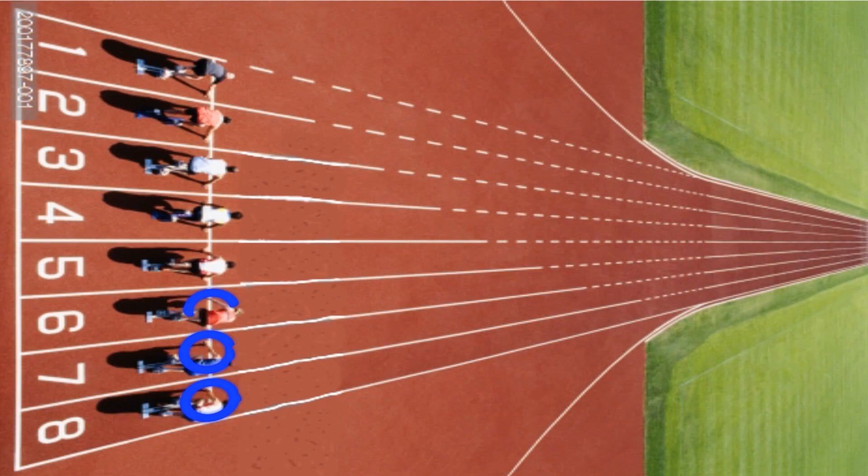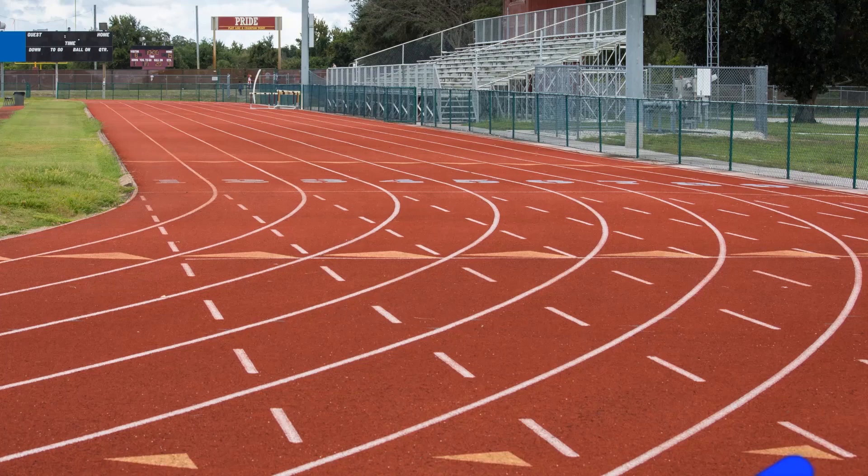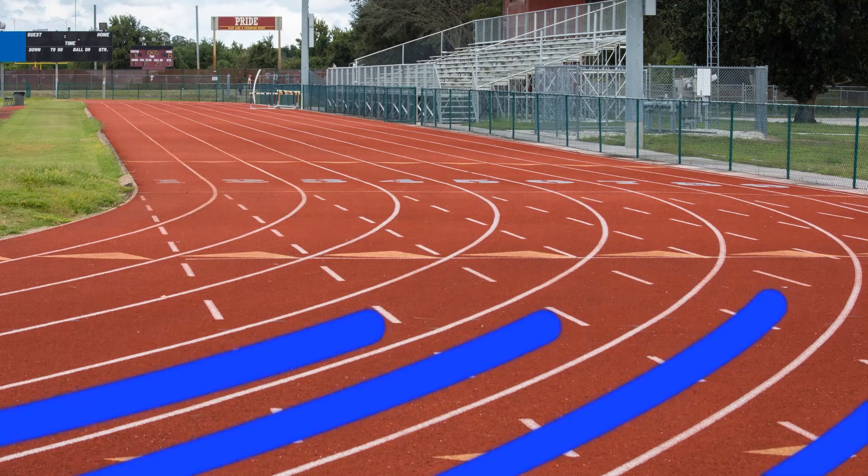This is a measurable difference, and it could add up to 2 tenths of a second over a 200m race. This means that you could win the race or get 4th and not even end up on the podium. To make a fair comparison, we suggest that sprinters with a left leg amputation should be assigned to the outer lanes of the track.